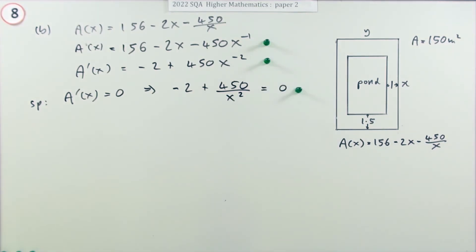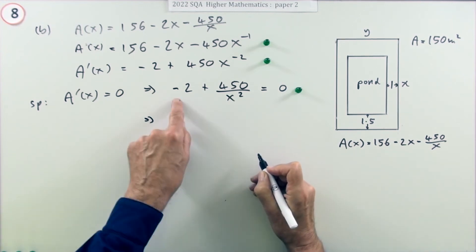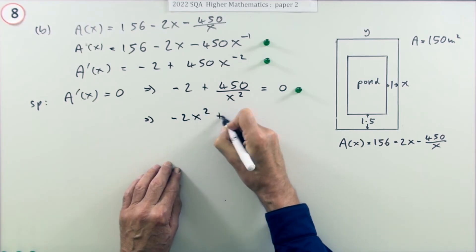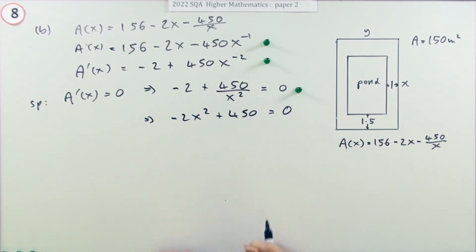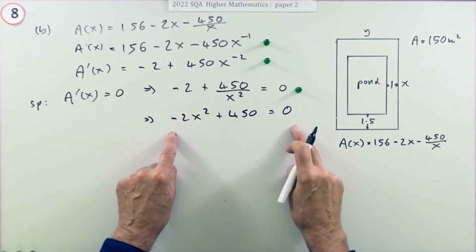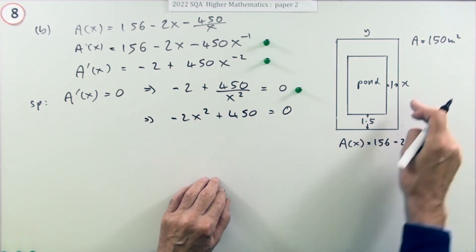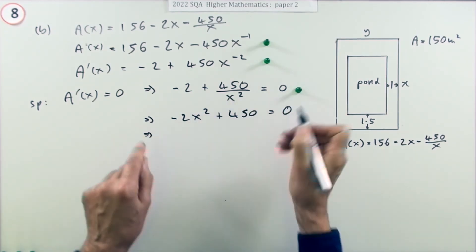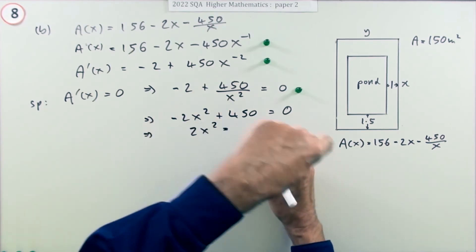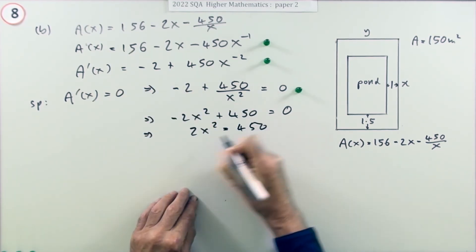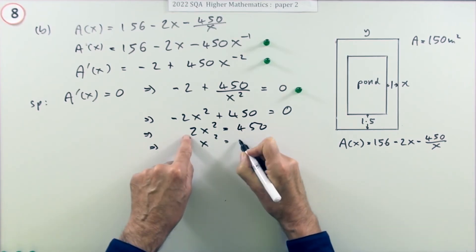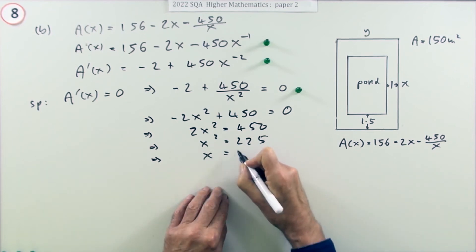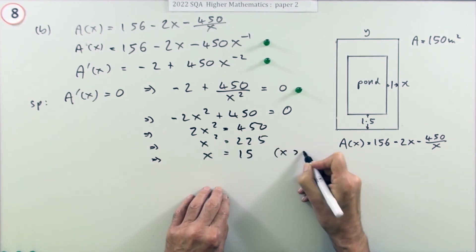Solving this: multiplying through by x squared, you've got negative 2x² plus 450 equals zero. You can multiply through by x² because you know x can't be zero. If x was zero there would be no area in the first place. That means 2x² is 450, x² is 225, square root of that: 15. You know x has to be greater than zero, so there's the value of x. That gets a mark.